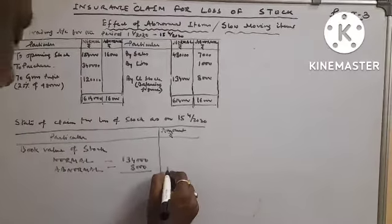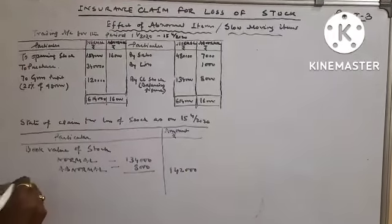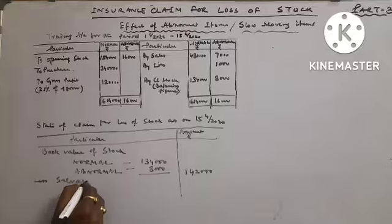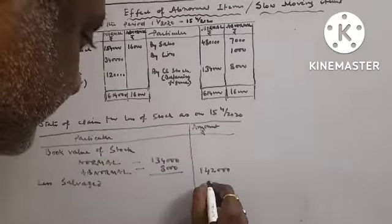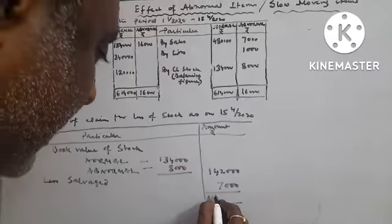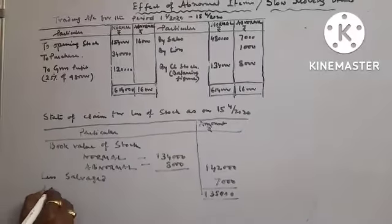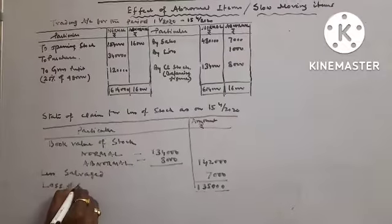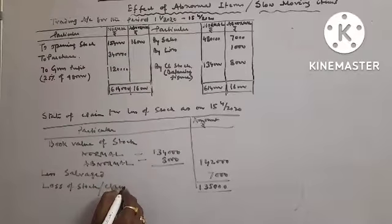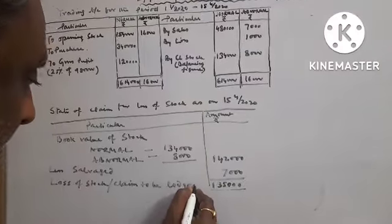Less salvaged, given 7000, 135,000. That is loss of stock, claim to be lost.